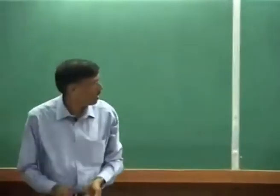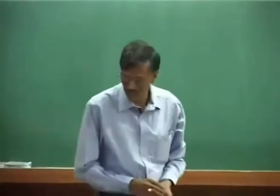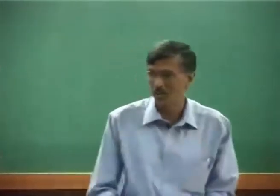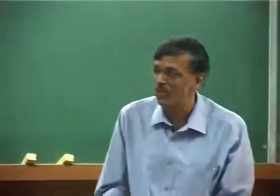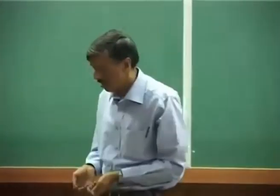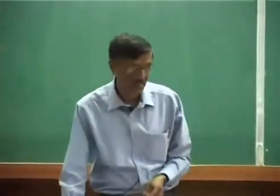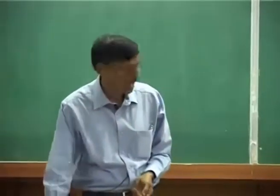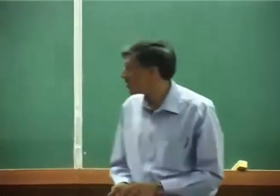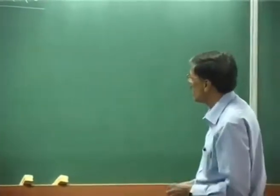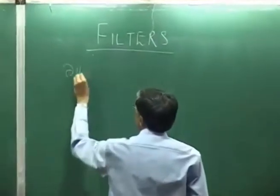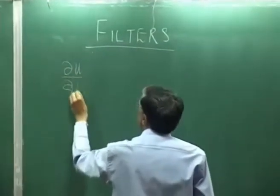Let us start our discussion again on filters. The assignment shows you what filters can do — if you have an unstable method, you could use a filter carefully and make it stable. That is precisely what we are trying to do. The basic principle remains that if you have an evolution equation, you have some solution depending on space and some time t_n, and through this equation you arrive at a new time state.